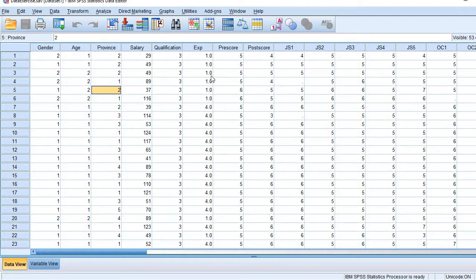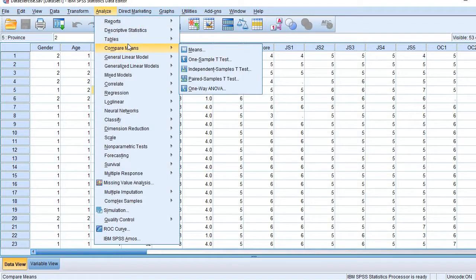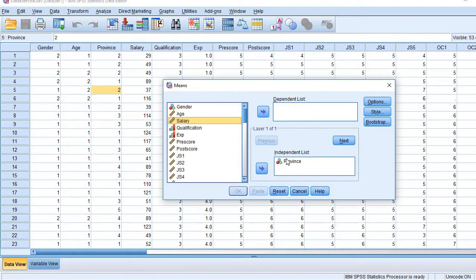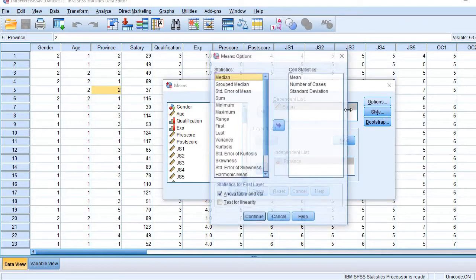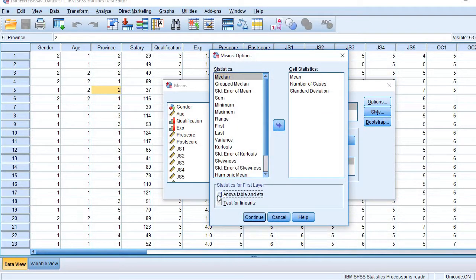So let us run ANOVA. Analyze, then compare means, and then means. And salary to be placed here because that is the dependent variable. Province is to be placed here in the independent variable. Go to the options and check the option of ANOVA table and ETA, continue.